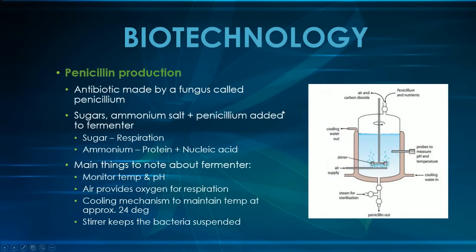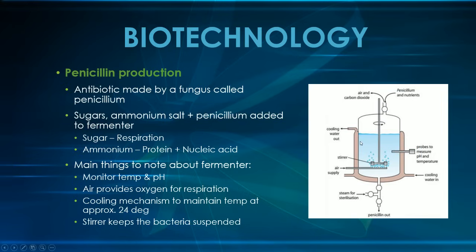In the production of penicillin, penicillin is an antibiotic made by a fungus called penicillium. You add penicillium with sugars and ammonium salt — the sugar allows the penicillium to respire and the ammonium is used by the penicillium to produce protein and nucleic acids. You mix all that together and use a fermenter. The fermenter controls and monitors pH, provides oxygen so the fungus can respire, has a cooling mechanism to maintain the culture at around 24 degrees, and a stirrer to keep the bacteria suspended in the culture. The penicillin is then extracted as the penicillium produces it.